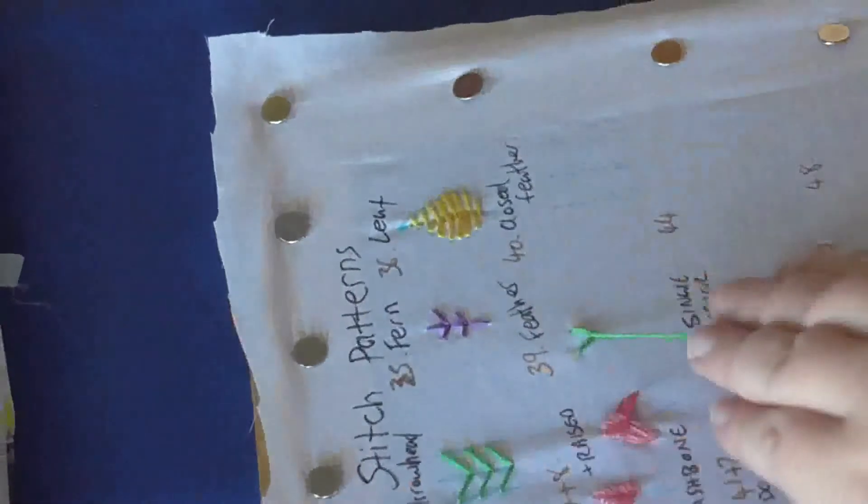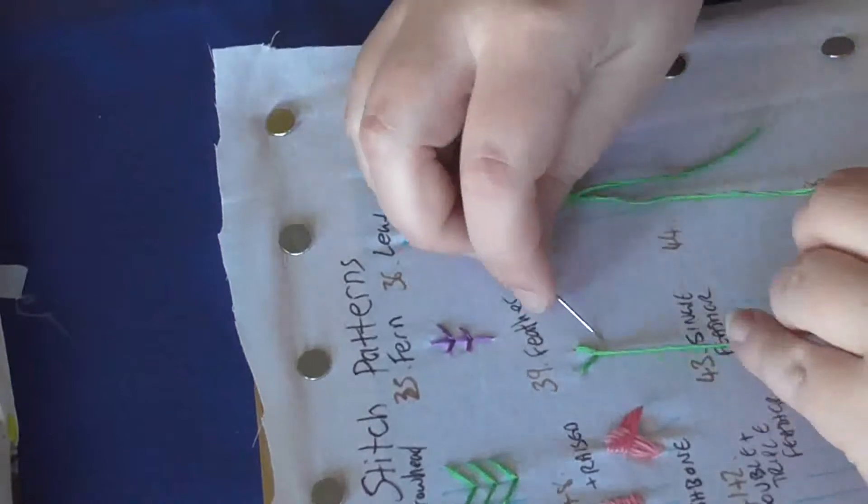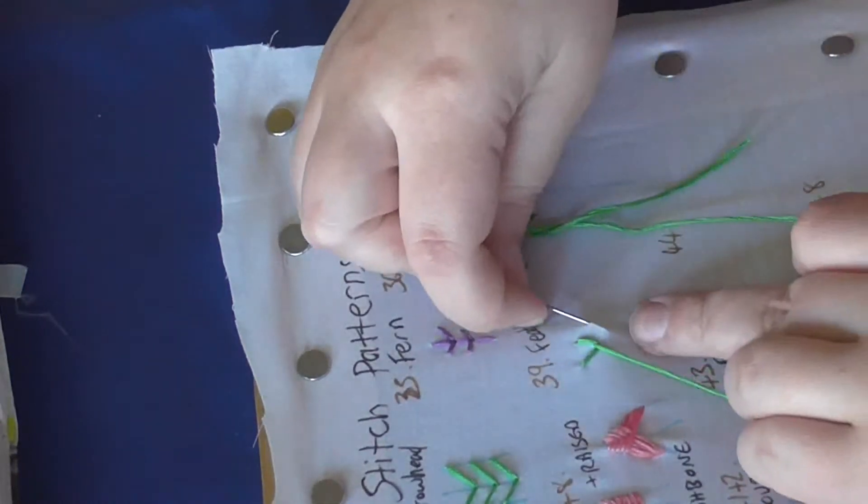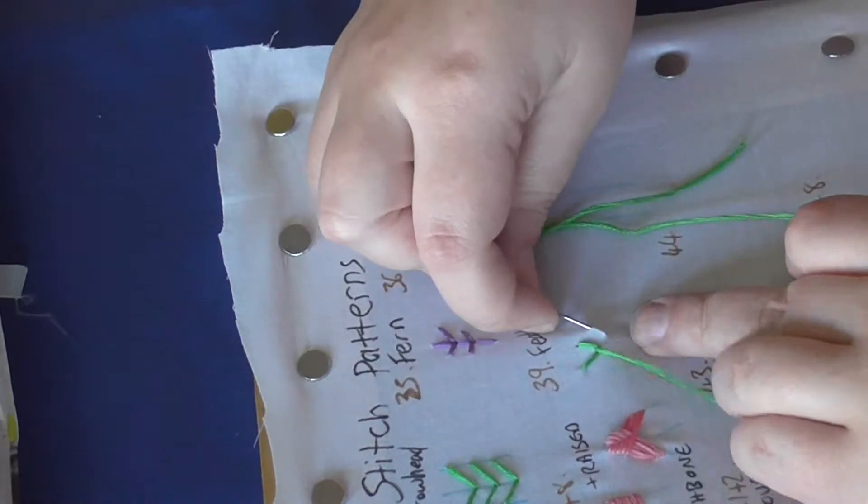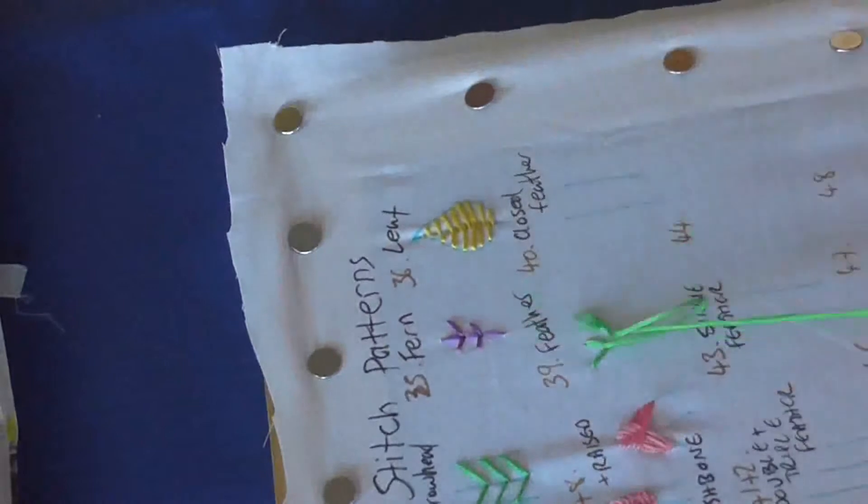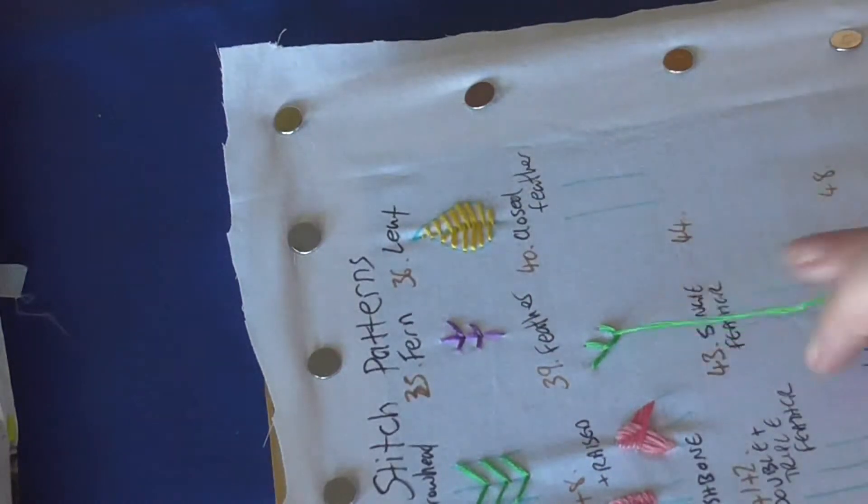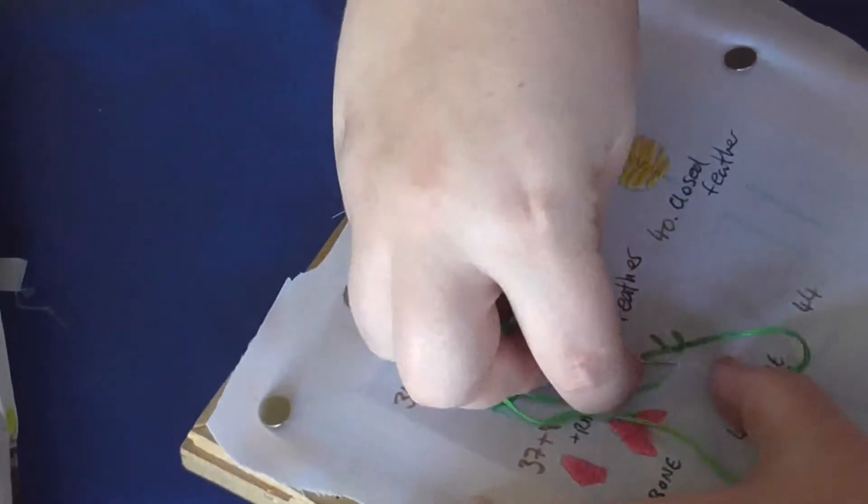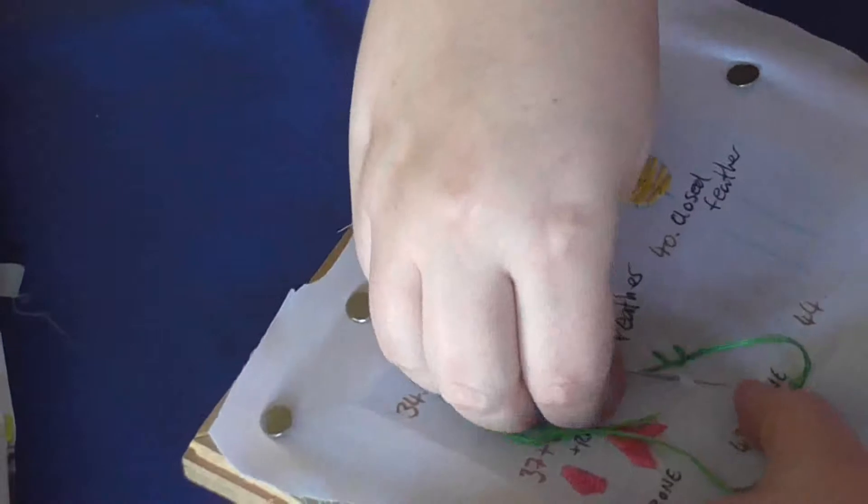Then come over back up again and just catch the thread each time. For the simple feather stitch, you just alternate direction - you go one to the right and then one to the left.